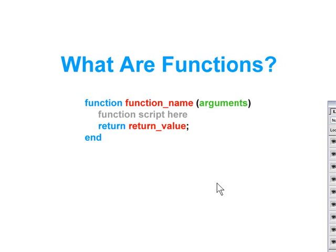One of the most powerful additions to version 5.0 of AutoPlay Media Studio is the ability to use functions in your script. This allows us to define code and reuse it by simply calling back the name of the function. It's a lot easier than it looks and we'll go ahead and take a look at that now.